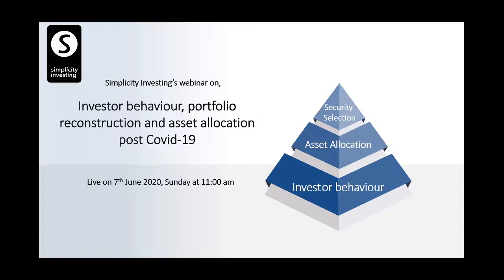The stock market and financial markets are going to behave the way they are going to behave. But everyone doesn't get the same return — why? There are three key components: one is security selection — what investments you select; second is asset allocation — how you allocate money between those assets; and third is how you behave when markets are volatile. It's like being a doctor — all doctors don't make the same money.